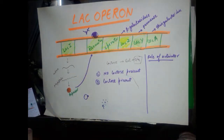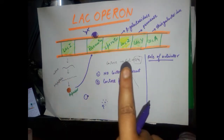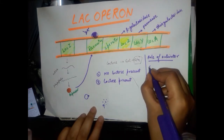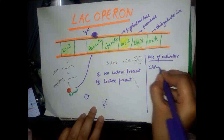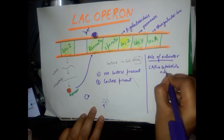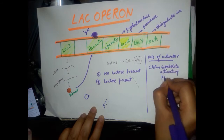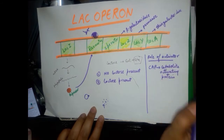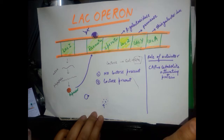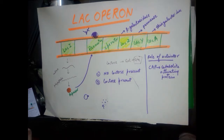Now we will look at the role of the activator in the operation of the lac operon. The activator of the lac operon is called CAP — catabolite activating protein.